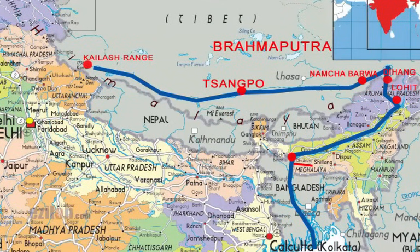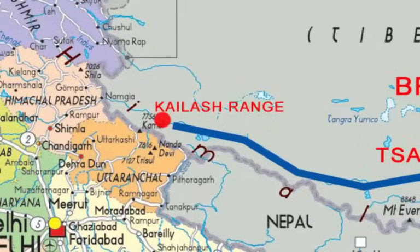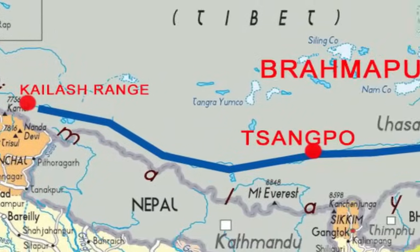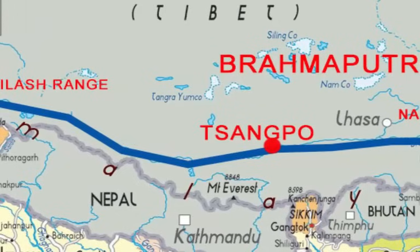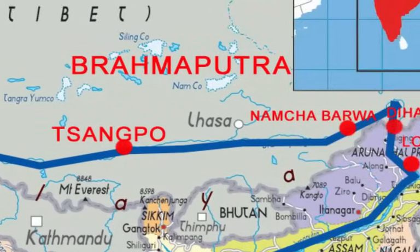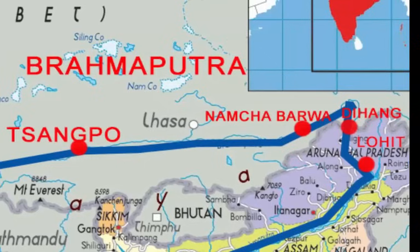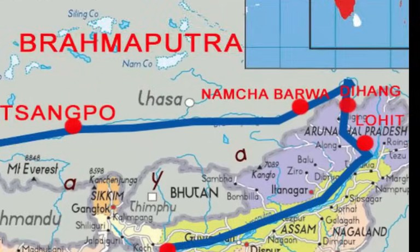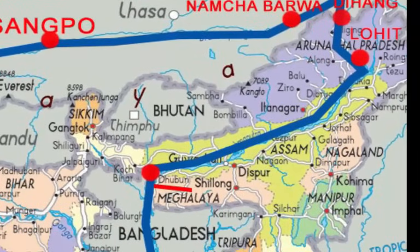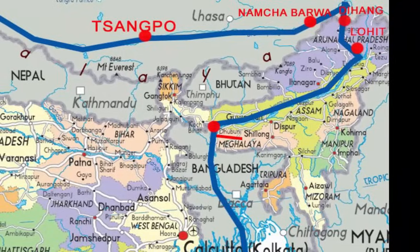The Brahmaputra is one of the largest rivers of the world. Its origin is in the Chemayungdung glacier in the Kailash range near the Mansarovar Lake. It flows into southern Tibet where it is known as the Tsangpo, meaning 'the purifier.' Near Namcha Barwa in the central Himalayas, the name changes to Siang or Dihang. It enters India west of Sadiya town in Arunachal Pradesh, then turns southwest receiving left bank tributaries like Dibang, Lohit, and Subansiri, and enters Bangladesh near Dhubri before finally falling into the Bay of Bengal.